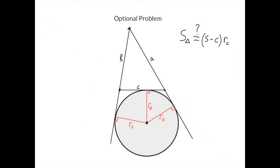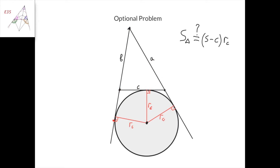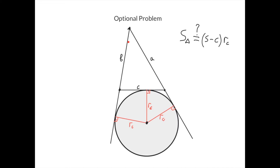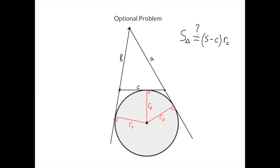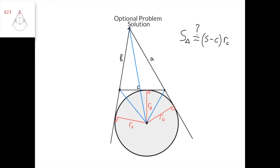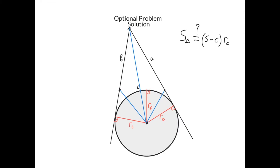Here's an optional problem, actually very similar to the one we just did. We have a triangle and its excircle with respect to side C, where Rc is the radius of that excircle. We need to prove that the area of the triangle equals (S − C) times Rc, where S is the semi-perimeter (A + B + C)/2. Since the excircle is tangent to all three sides, each angle between a radius and a tangent side is 90 degrees. The area of the triangle plus the area of this sub-triangle equals the area of this quadrilateral. But the area of the quadrilateral can also be written as the area of this triangle plus the area of this triangle.